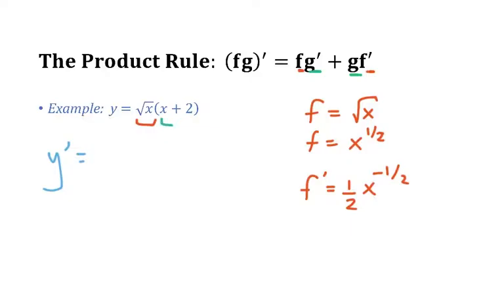For our function g in this example, g is x+2. The derivative of x+2 is just 1. Now that I have the pieces of the product rule on the side...